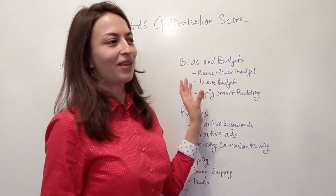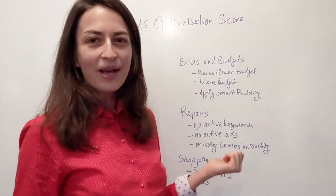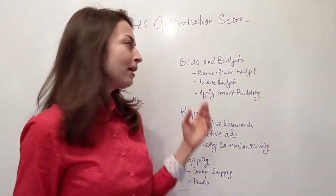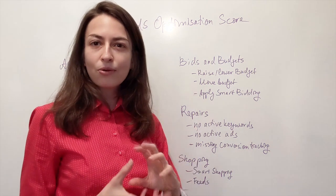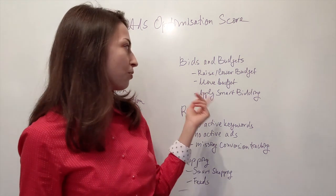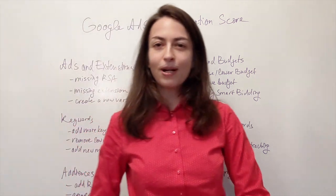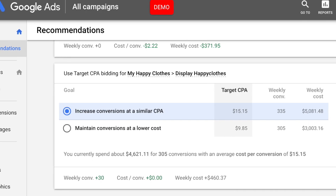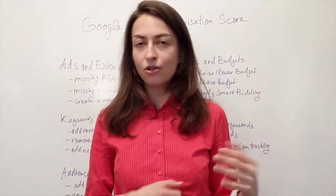You also have recommendations under Bids and Budget. Advertisers were very cynical about these because they used to just prompt you to raise your budget, but now you actually see recommendations to lower your budgets when campaigns aren't performing well, or to move budget from a campaign that isn't performing to one that is already reaching its daily limit and bringing a lot of conversions. You can also use recommendations here to apply different smart bidding solutions, and they'll give you an actual estimation of the potential uplift — how much more you'll pay and how many more conversions you'll get at what cost per conversion.